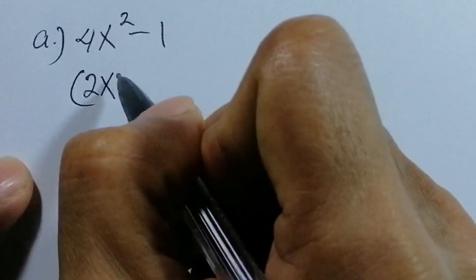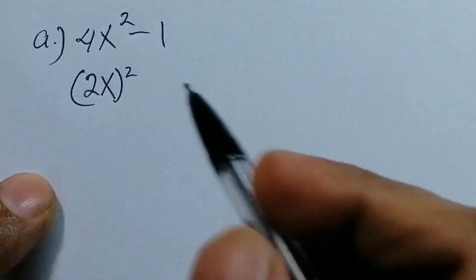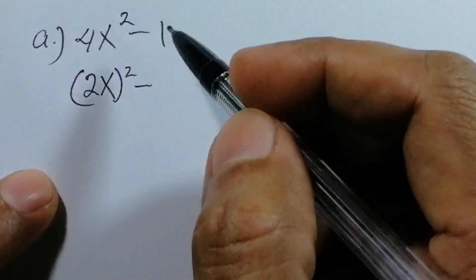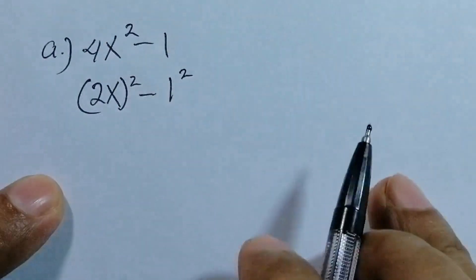So we write it as (2x)². We write it in the form of difference of two squares, so 1 becomes 1².